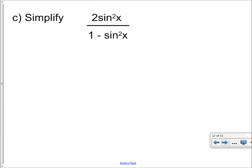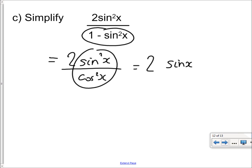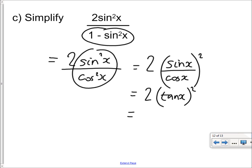The last question asks us to simplify rather than prove. We know that 1 minus sine squared x equals cos squared x, so 2 sine squared x over 1 minus sine squared x equals 2 sine squared x over cos squared x. That's the same as 2 lots of sine x over cos x all squared. Since sine x over cos x equals tan x, we have 2 lots of tan x all squared, which simplifies to 2 tan squared x.